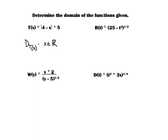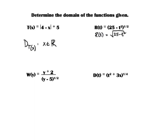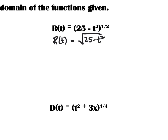For r(t) = the square root of (25 minus t squared), I want the radicand to be greater than or equal to zero. Solving: 25 minus t² ≥ 0 gives negative t² ≥ negative 25, and flipping the inequality gives t² ≤ 25. I need to find when t squared is less than or equal to 25.